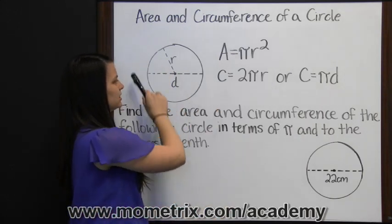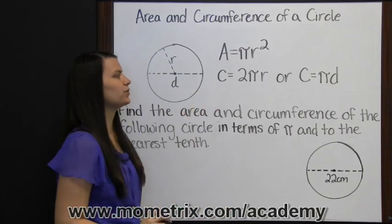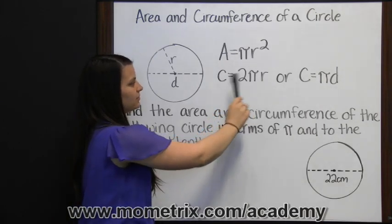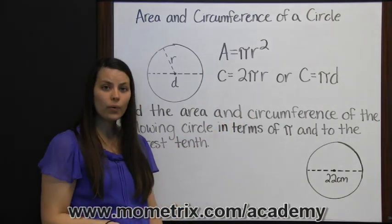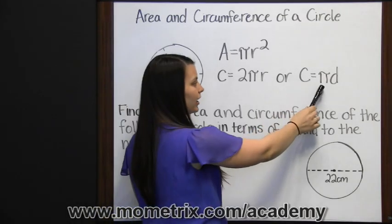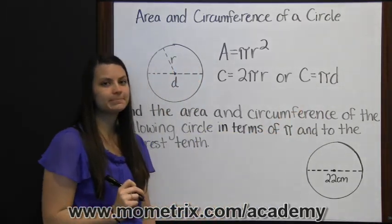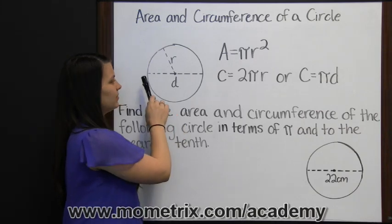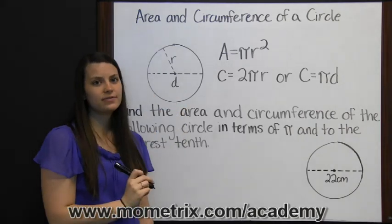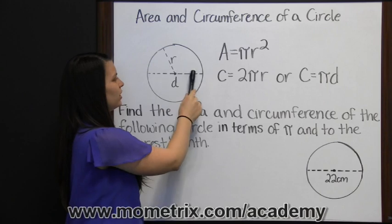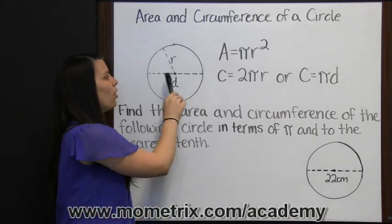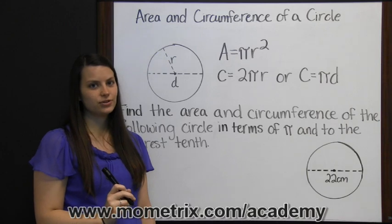Circumference, which is the distance around the circle, is two times pi times the radius or pi times the diameter. The diameter of a circle is a segment that passes through the center of the circle and has its endpoints on the circle, or it goes all the way across your circle.